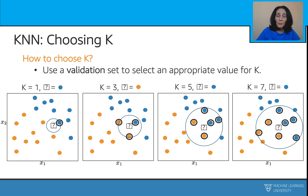You might wonder: what is the best value for k? You can't really determine this just by looking at your training data. The ideal way to choose the best value of k is to use a validation set — train different k-nearest neighbor models with different k values on a training dataset, validate those models on a validation set, and pick the k value that gives the best performance.